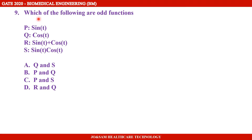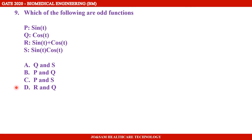The 9th question is from Engineering Mathematics. Which of the following are odd functions? The options given are: P) sin t, Q) cos t, R) sin t plus cos t, S) sin t into cos t. Option A: Q and S, Option B: P and Q, Option C: P and S, Option D: R and Q.